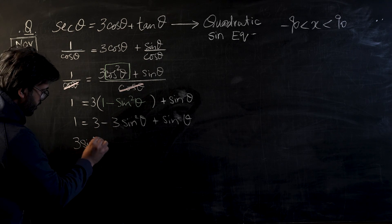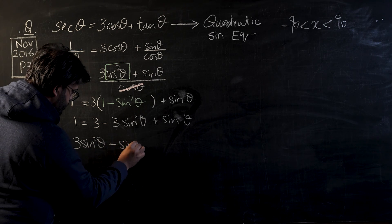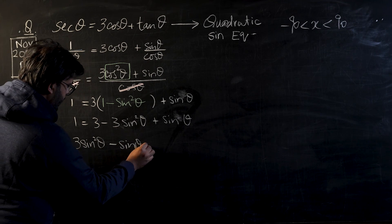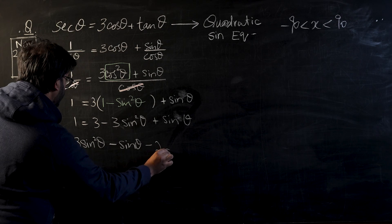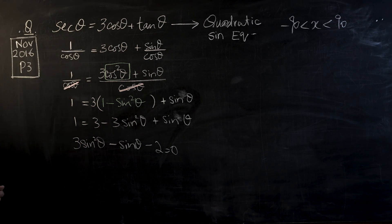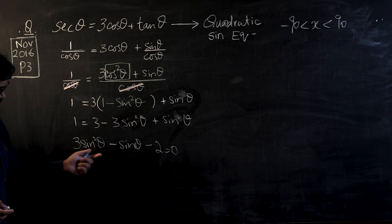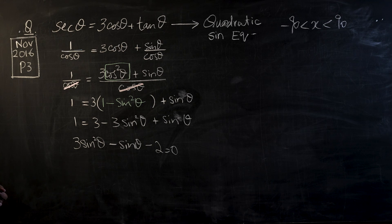And now we can bring everything to left-hand side. So this will become 3 sin² θ minus sin θ and minus 2. One minus three will become minus two, would become equal to zero.